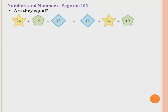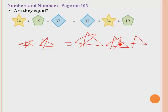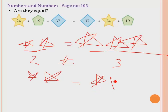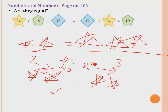Here a few numbers are given and we are asking whether they are equal. Let's see — if I draw two stars on one side and three stars on the other side, they are not equal. But if I draw two stars on each side, they are equal. The left side is called the Left Hand Side (LHS) and the right side is called the Right Hand Side (RHS).